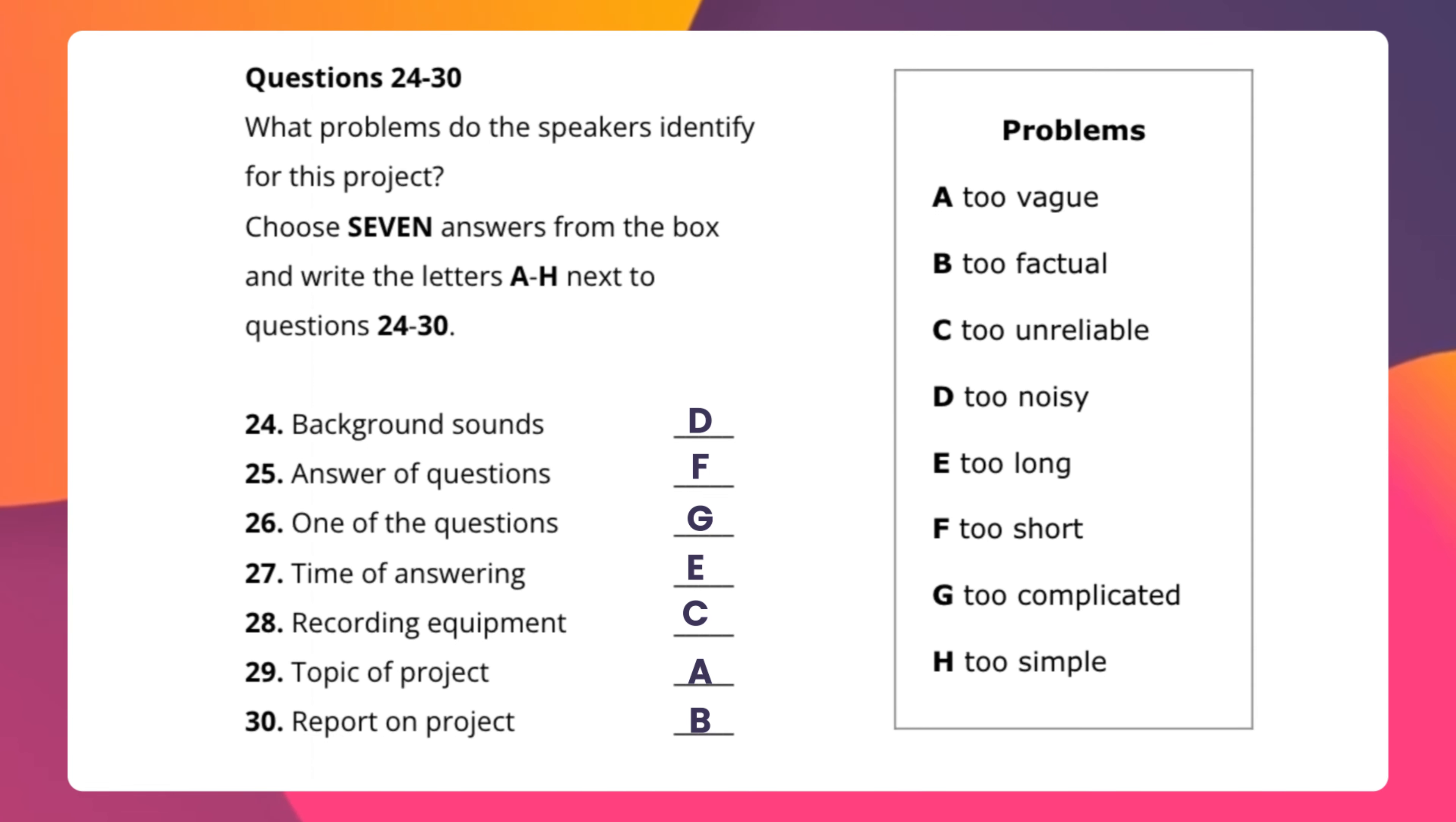Time of answering, so it talks about the length and that's why it says either it can be short or it can be long. Recording equipment, you cannot rely on the recording or you cannot rely on the equipment and that's why it can be unreliable. Topic of project can be too disturbing or it can be too informal because when we talk about vague that means it can be informal. Report on project can be too factual, that is it can include a lot of factual statements or it can include a lot of false statements, so the answer can be either one. Here if you just read the questions you can definitely predict the answers before listening to the audio.